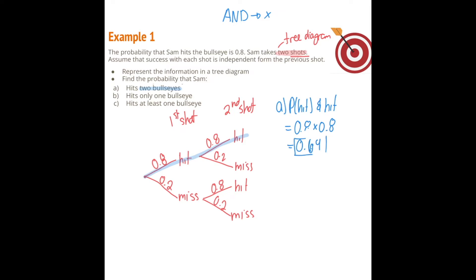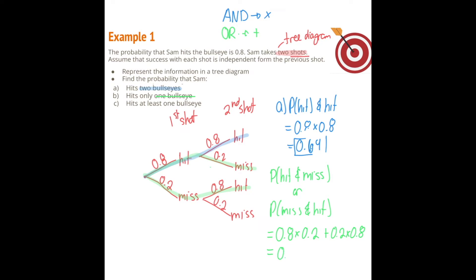Part b: find the probability of hitting exactly one bullseye. That means we're either in hit-miss or miss-hit. The word 'or' corresponds to addition. Going along each branch we multiply, so we have the probability of hit-and-miss (0.8 × 0.2) plus the probability of miss-and-hit (0.2 × 0.8), giving 0.32.